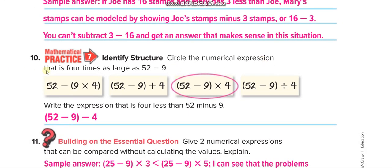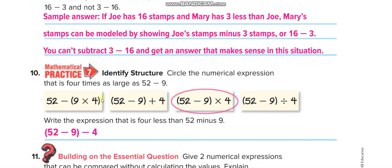Circle the numerical expression that is 4 times as large as 52 minus 9. 4 times of 52 minus 9. So this one, 52 minus 9, and then times it by 4.